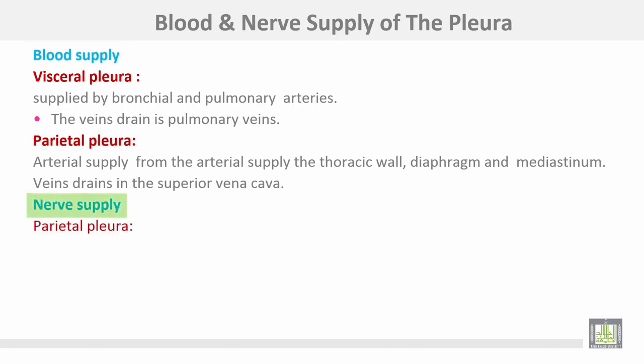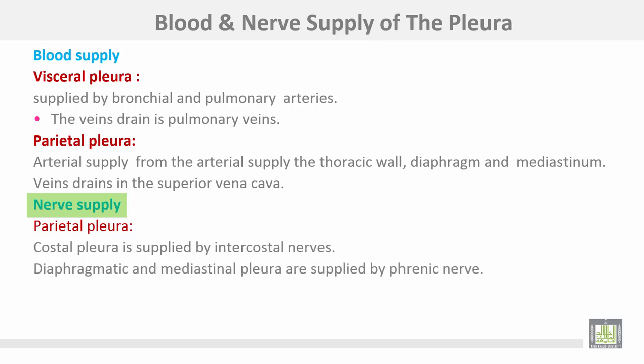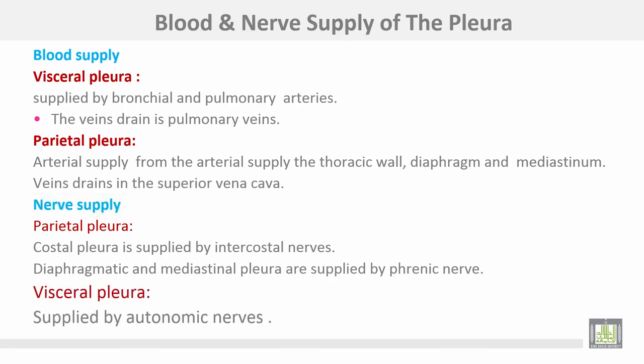Nerve supply: the parietal pleura — the costal pleura is supplied by intercostal nerves, while the diaphragmatic and mediastinal pleura are supplied by the phrenic nerve. The visceral pleura is supplied by autonomic nerves.